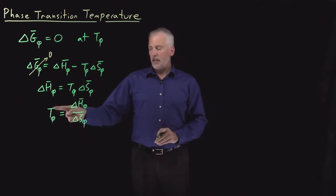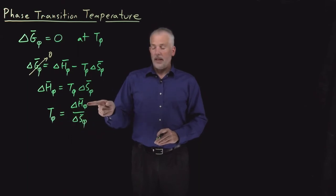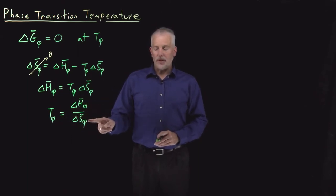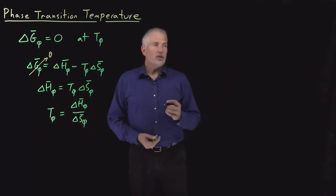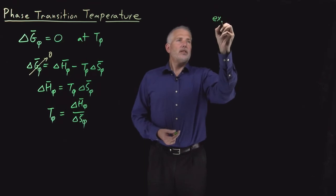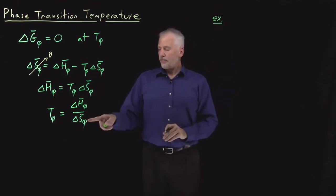So here's a relationship between three quantities, the temperature, let's say the melting point, the enthalpy change when a substance melts, and the entropy change when a substance melts, or same thing for boiling or any other phase change.